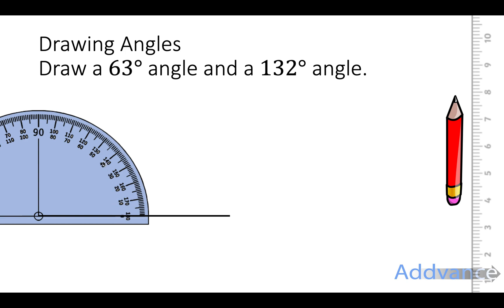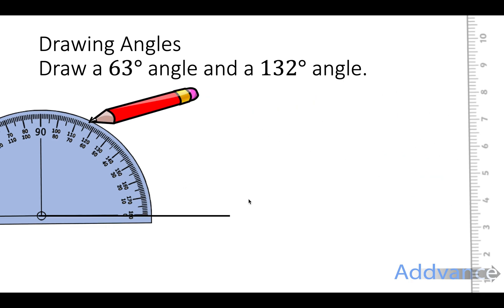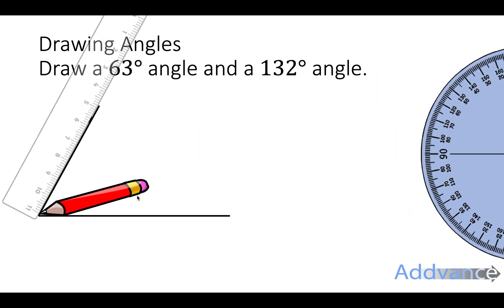30, 40, 50, 60 and 3 and we put a dash here for 63. Then we take our ruler and we draw a line from the absolute tip of this first line to our dash and it is a perfect 63 degree angle.